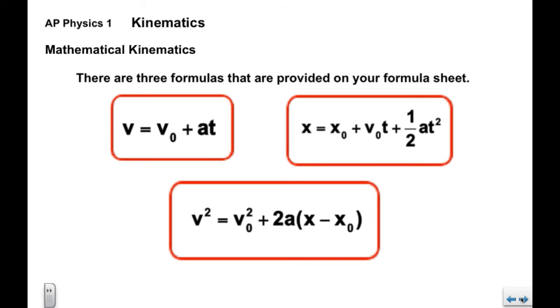There are three formulas that you will be provided with on your formula sheet, you never have to memorize these. We've got v equals v naught plus at, x equals x naught plus v naught times t plus one half at squared. This one is probably used most commonly. And then last we have v squared equals v naught squared plus 2a times x minus x naught. These three formulas will be at your disposal anytime you take a quiz or an exam.